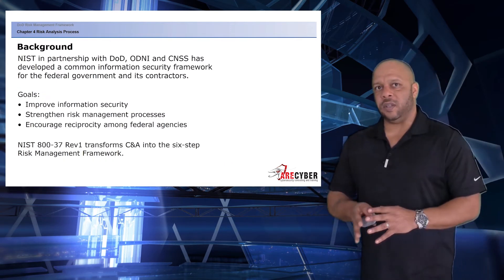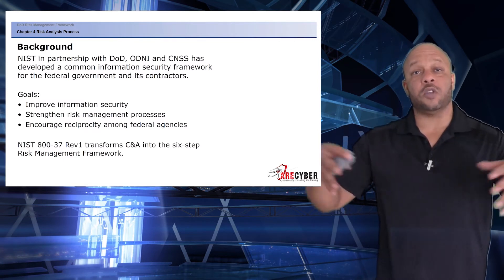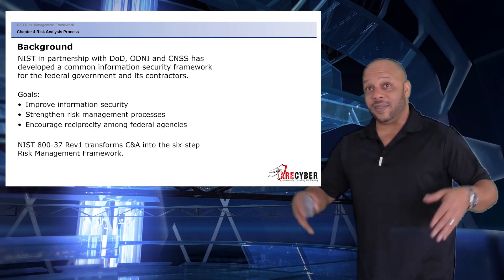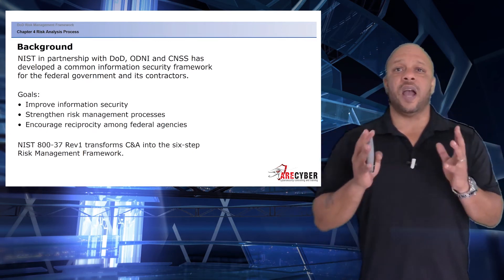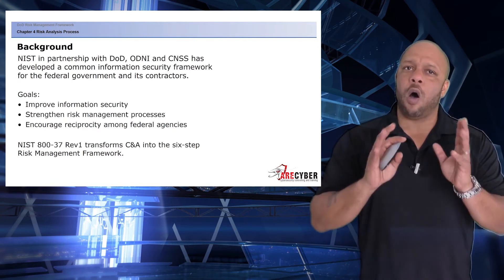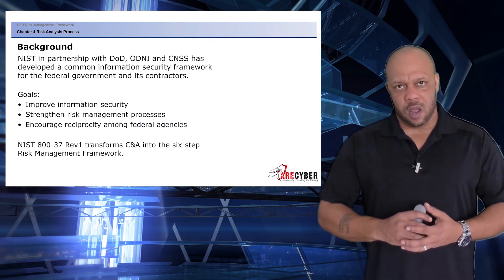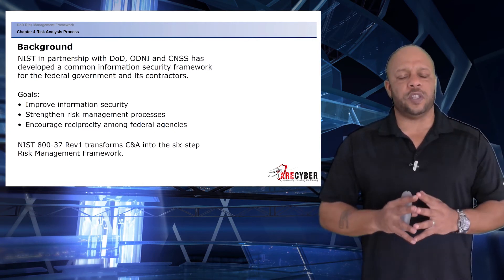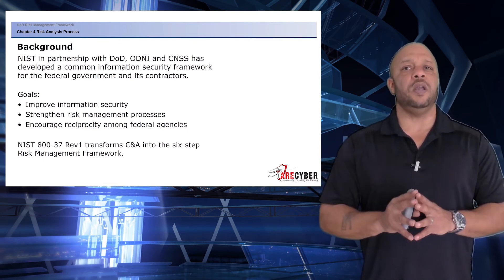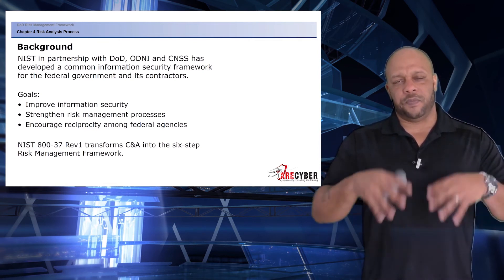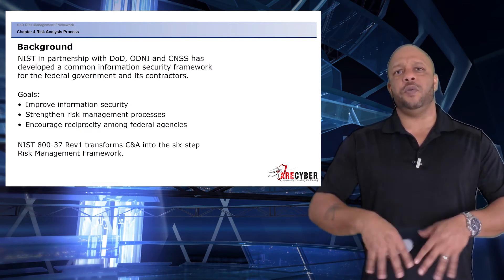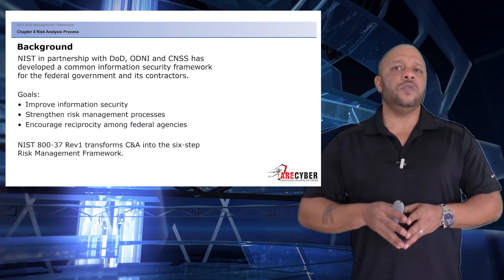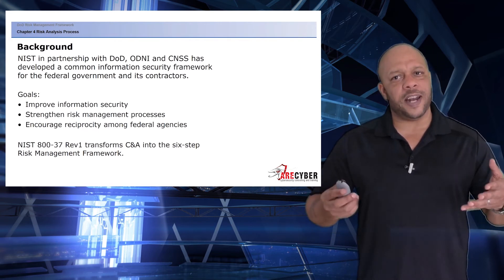Now that we've laid out the four primary steps, let's look at how it fits together across all components. Remember that NIST, in partnership with the DoD, the Intelligence Communities, and CNSS, has developed a common information security framework for all federal government and contractors. The overall goal is to improve information security, strengthen risk management processes, and encourage reciprocity among all federal agencies. This is laid out in NIST 837, which transforms the classic CNA into a well-defined six-step risk management framework.